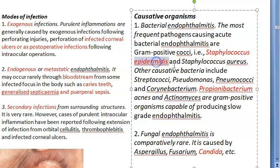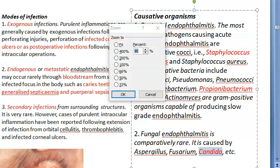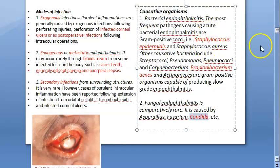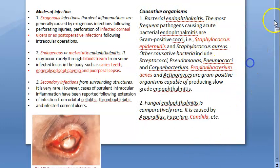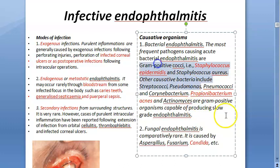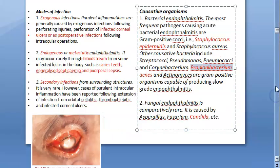The causative organisms include Staphylococcus epidermidis, Staphylococcus aureus, Propionibacterium acnes, and fungi like Candida. For early onset endophthalmitis, Staphylococcus epidermidis and Staphylococcus aureus are the main organisms. For late onset, fungi and Propionibacterium acnes are more relevant.